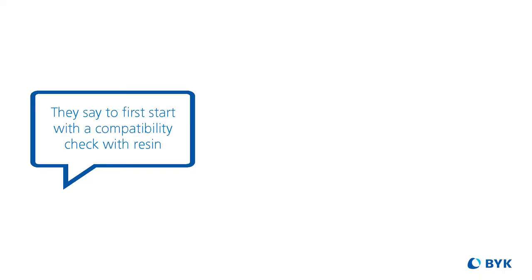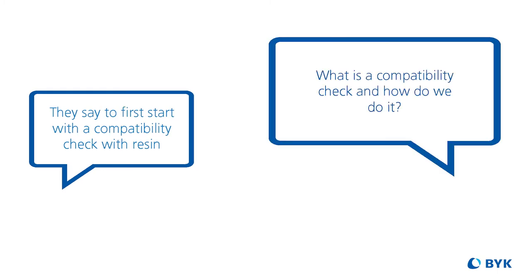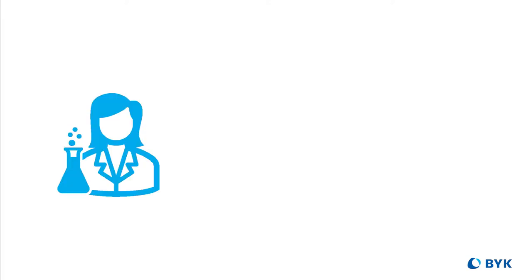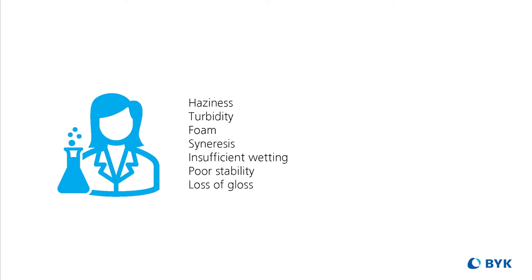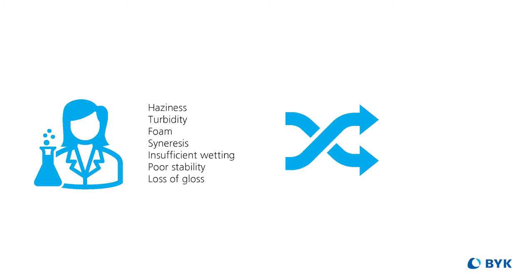The most important test for the best additive is to check its compatibility with the specific system, and even though it is the best test, it is often not done. If the dispersant is not compatible with the resin or the solvent combination, it can lead to many issues which are harder to eliminate later — such as haziness, turbidity, foam stabilization, and syneresis. To do a compatibility check, mix 90 parts of the resin with about 10 parts of additive, shake or mix well, and check for signs of incompatibility.